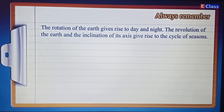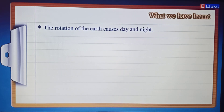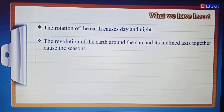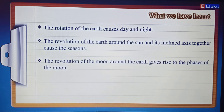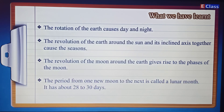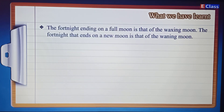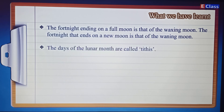Summary — What we have learned: the rotation of the Earth causes day and night. The revolution of the Earth around the Sun and the inclination of its axis together cause the seasons. The revolution of the Moon around the Earth gives rise to the phases of the Moon. The period from one new moon to the next is called a lunar month, with about 28 to 30 days. The fortnight ending on a full moon is that of the waxing moon; the fortnight ending on a new moon is that of the waning moon. The days of the lunar month are called tithis.